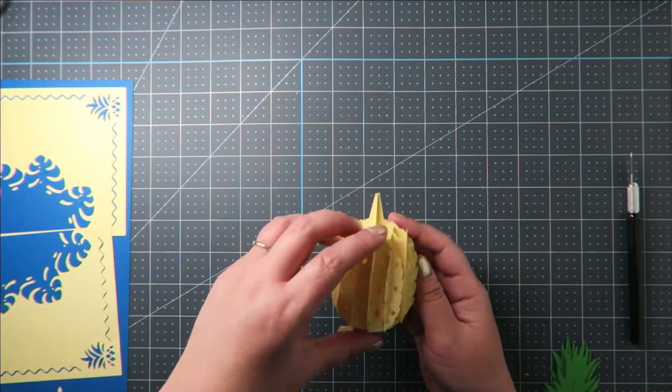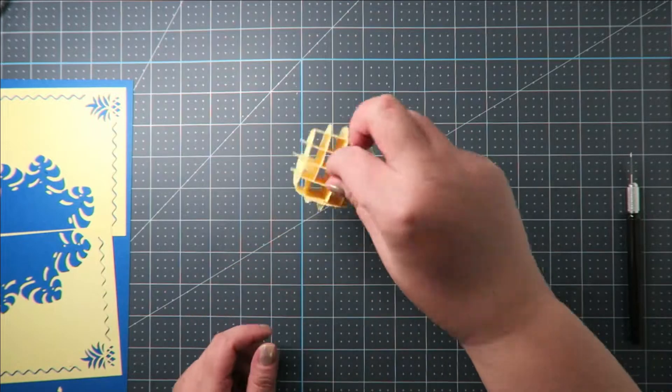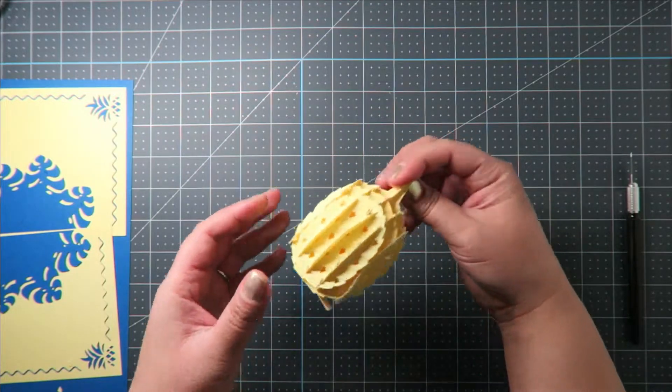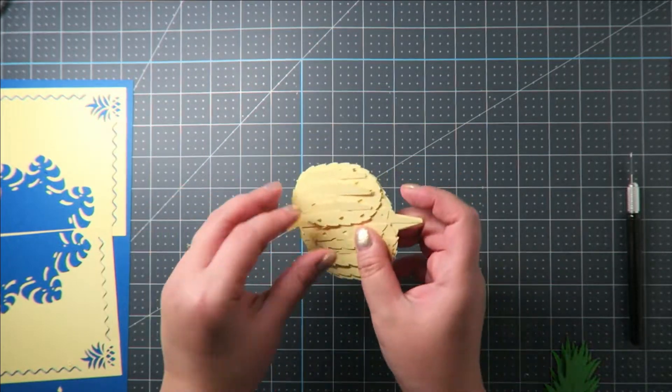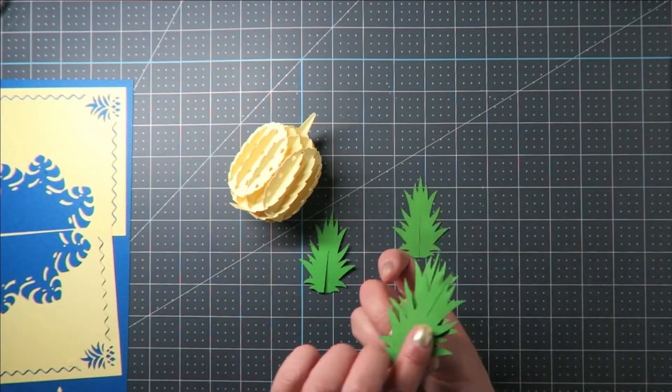But, it was all worth it in the end because now we have a pineapple with feet. If you take your pineapple and flatten it, you will be able to see how it will sit in the card. And these two actually are its little glue tabs.